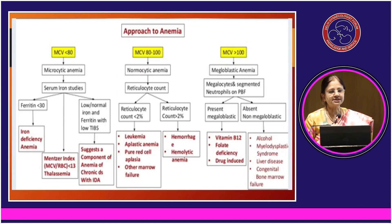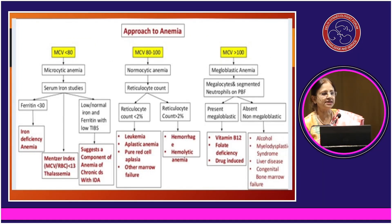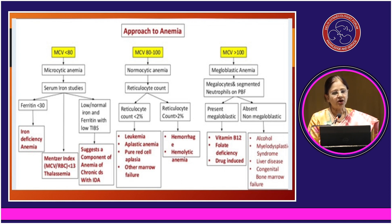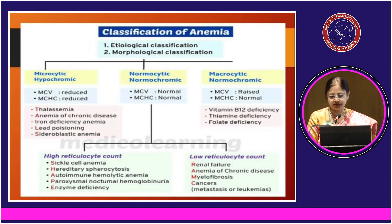Dr. Enu has already discussed the approach to anemia on the basis of the complete blood count. The MCV value if less than 80 is microcytic anemia. We do the serum iron studies and then, depending on those results, we see whether it's iron deficiency, thalassemia, or due to any chronic disease. If it's normocytic, we look at the reticulocyte count to decide the type. If it is megaloblastic — MCV more than 100 — then we see the different causes of megaloblastic anemia.